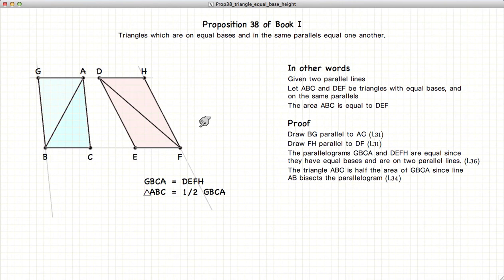We also know from Proposition 34 that if we have a diagonal in a parallelogram, the resulting triangle is one-half the area of the parallelogram. So ABC is one-half the area of this parallelogram, and similarly triangle DEF is one-half the area of this parallelogram.